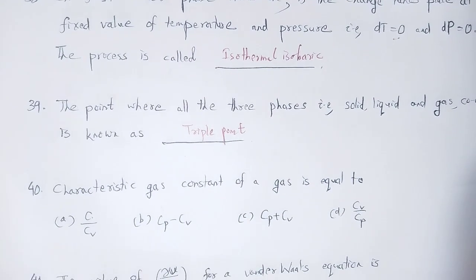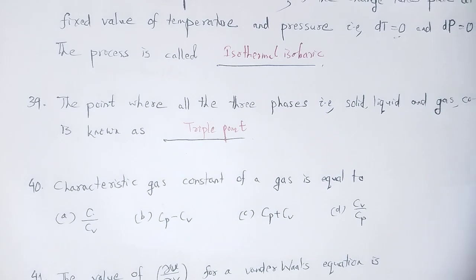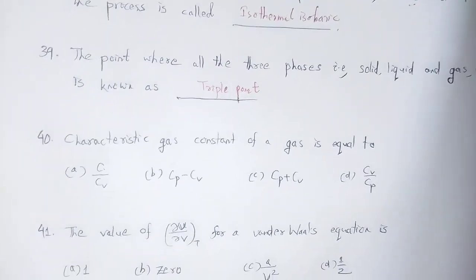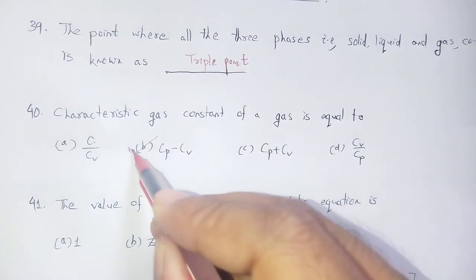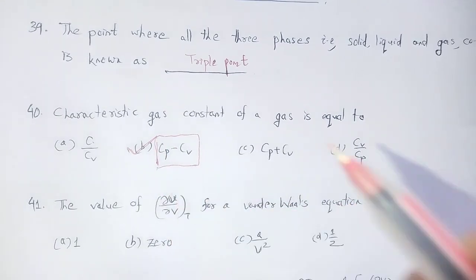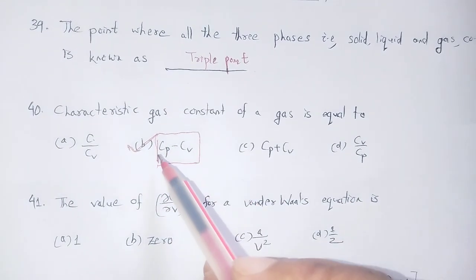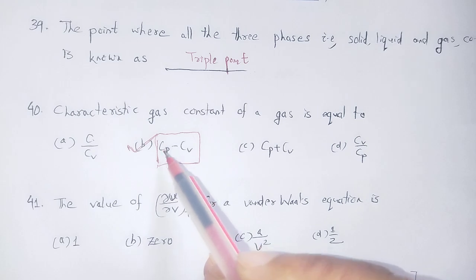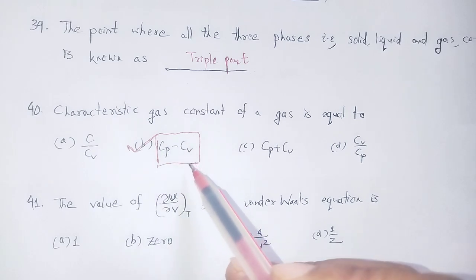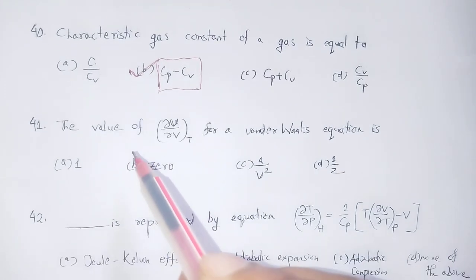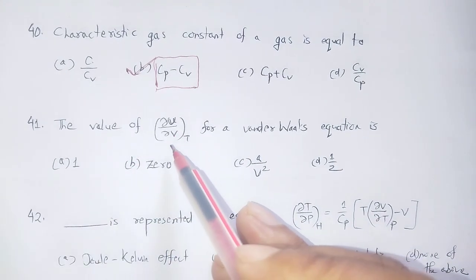The characteristic gas constant of a gas is equal to Cp minus Cv, which equals R. Option number B is correct. Cp is specific heat at constant pressure, Cv is specific heat at constant volume. This is Mayer's formula.